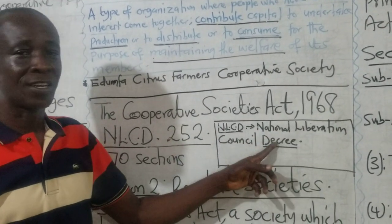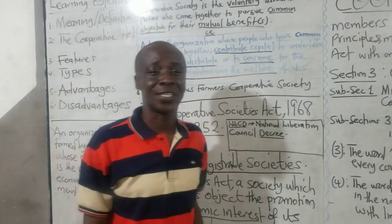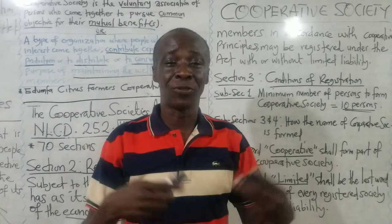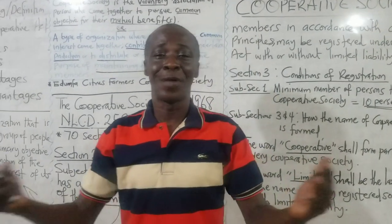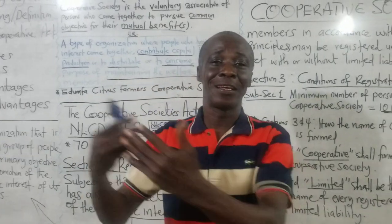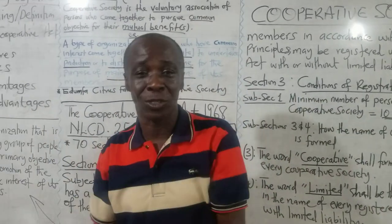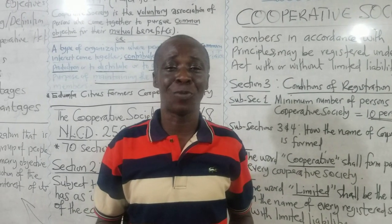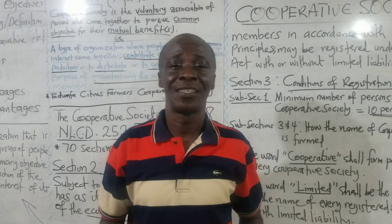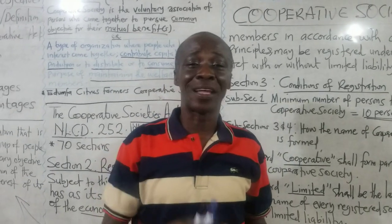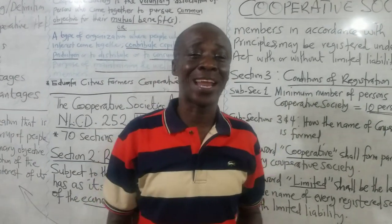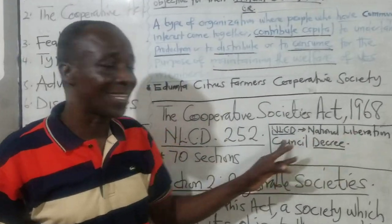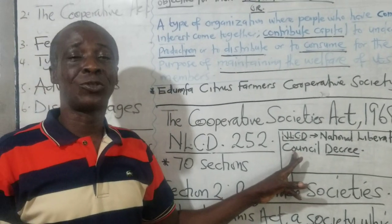Our first president was Dr. Kwame Nkrumah, and his government was overthrown through a coup d'état. Kwame Nkrumah was overthrown in 1966. Those who overthrew Dr. Kwame Nkrumah gave themselves the name National Liberation Council.